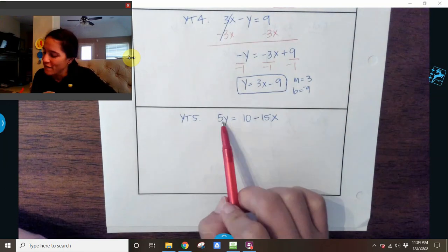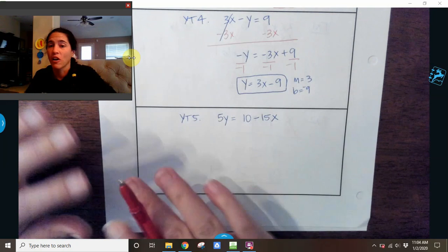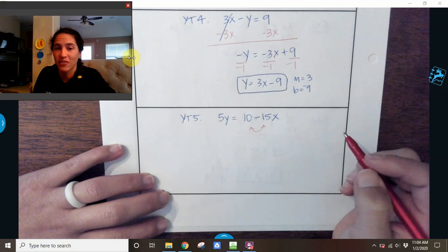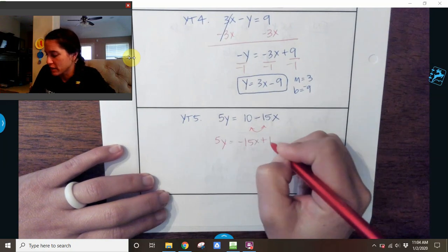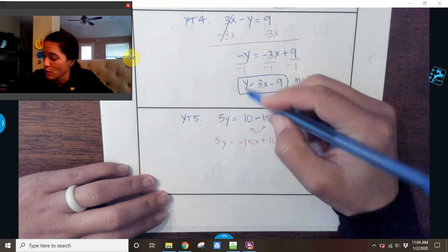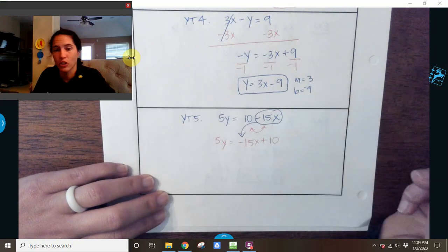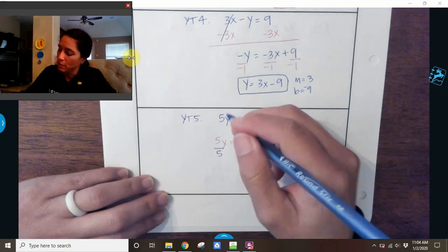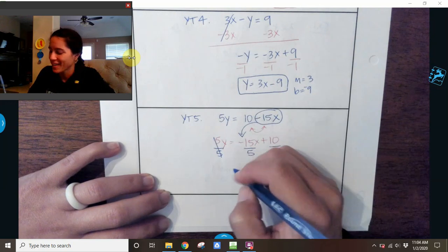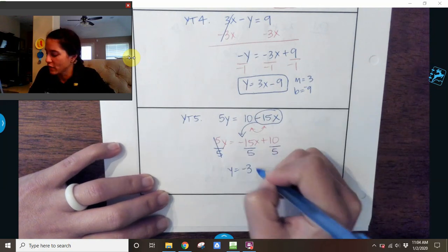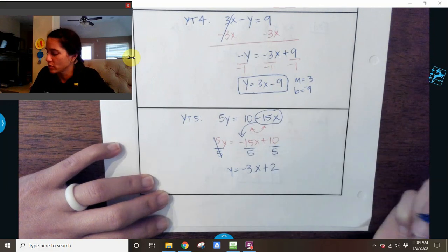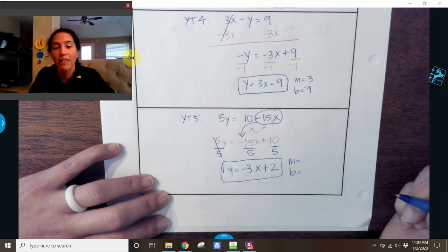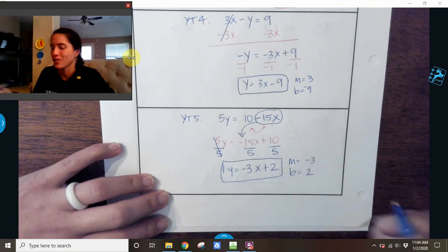All right, last one. 5Y equals 10 minus 15X. The X is already moved over. The constant 10 has already moved over. But I need to switch them because they're not in the right place. So negative 15X plus 10. Remember, the 15X is the one that has the negative, so that has to go first. Then I'm going to divide by 5. Negative 15 divided by 5 is negative 3. And 10 divided by 5 is 2. And then I just double check and make sure I have all my negatives correct. So in this problem, my slope is negative 3 and my Y intercept is 2.